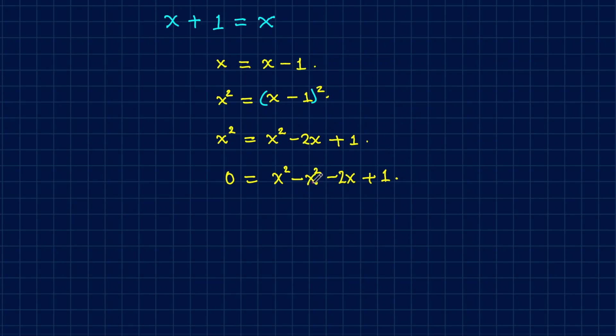So you can see that this x squared is crossing out and we're left here with only negative 2x plus 1.